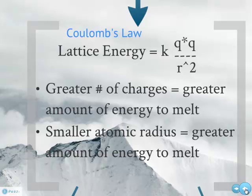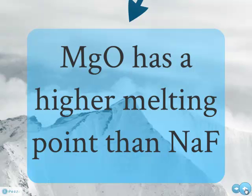Lattice energy comes from a thing called Coulomb's Law. Coulomb's Law comes down to an equation: KQQ over R squared. The Q's stand for charges; the R stands for radius. The greater number of charges — that's the numbers on the numerator at the top — the greater amount of lattice energy in order to melt. And the smaller the atomic radius, which is the number on the denominator, the greater amount of energy it needs to melt. For example, MgO has a higher melting point than NaF. MgO is +2, −2; NaF is +1, −1, which means MgO is a stronger magnet — a stronger lattice energy — so MgO takes a lot more energy because it has a greater number of charges.